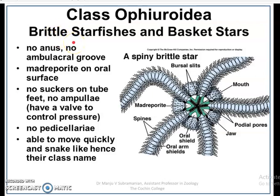Welcome students to the second section of the water vascular system in Echinoderms. In this section we will discuss the water vascular system in Ophiuroidia. The water vascular system of Ophiuroidia is basically similar to that of Asteroids, but there are certain differences. We will examine what those differences are between Ophiuroids and Asteroids.